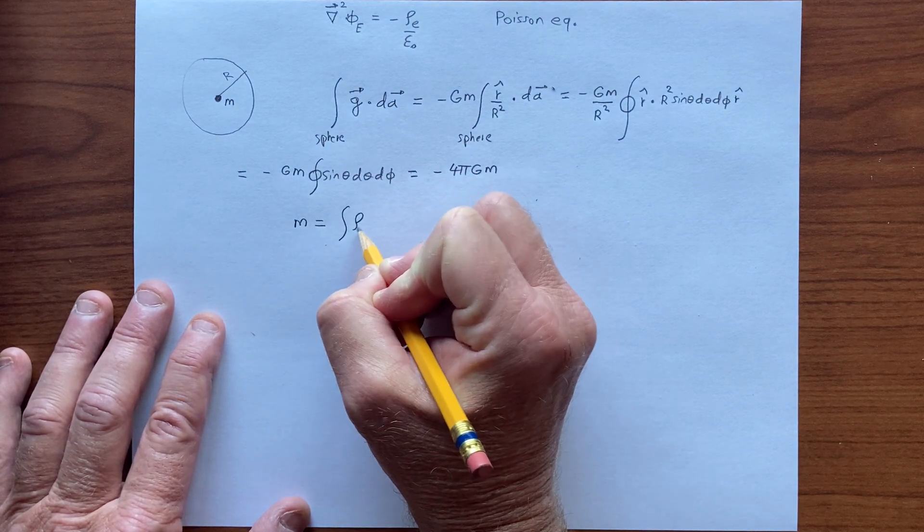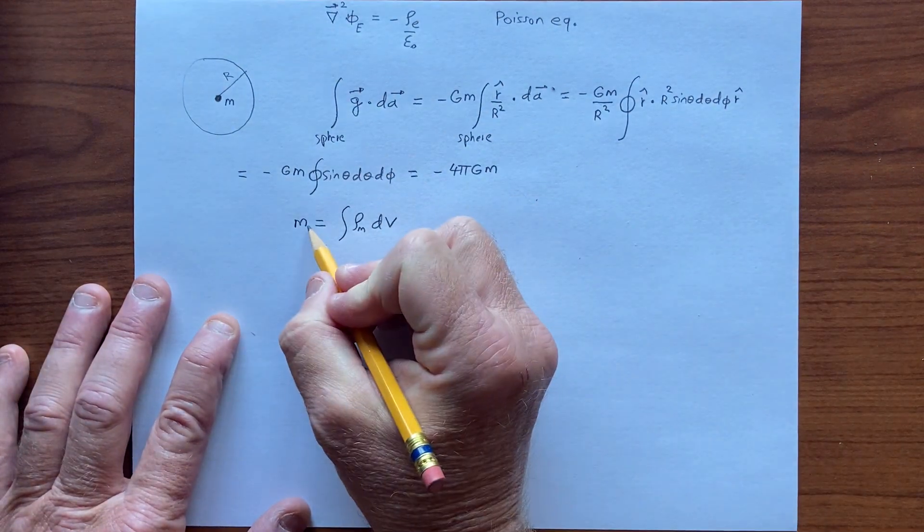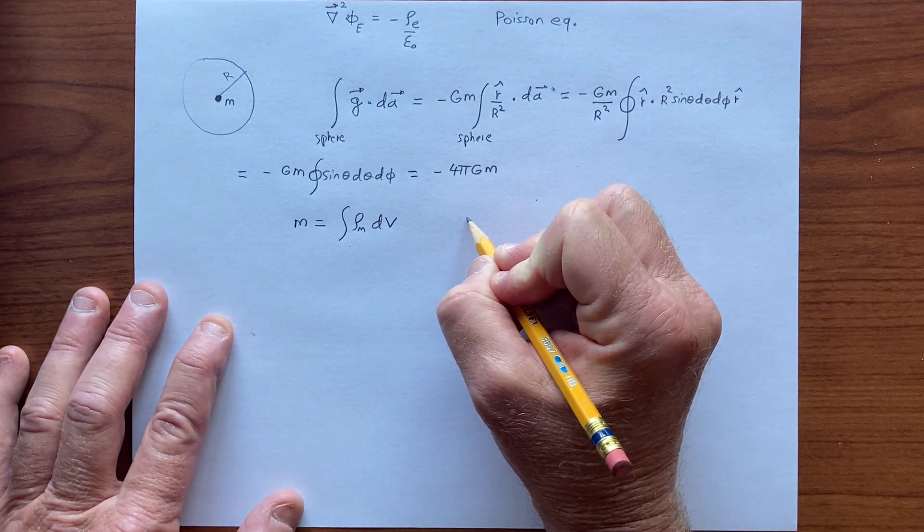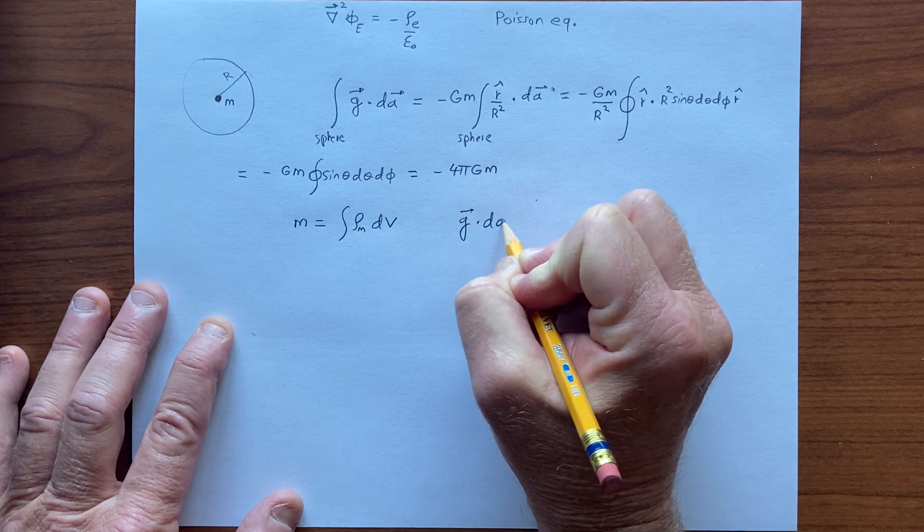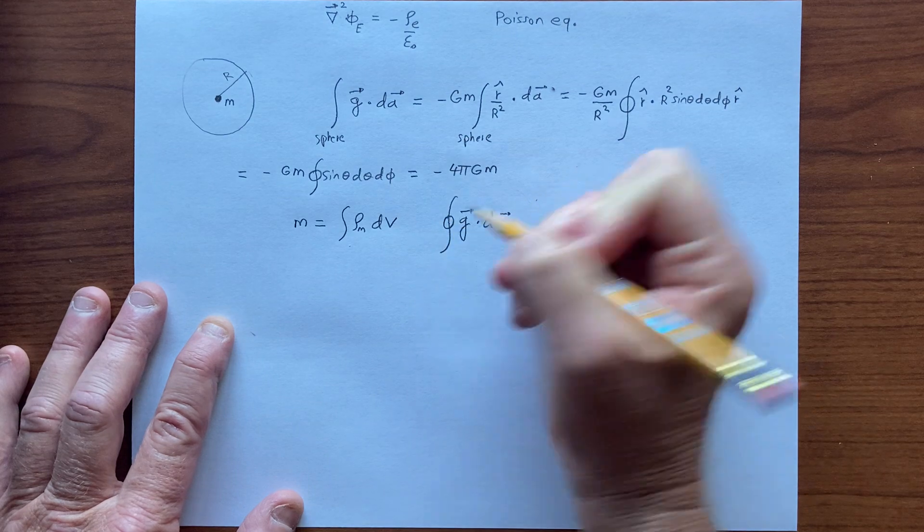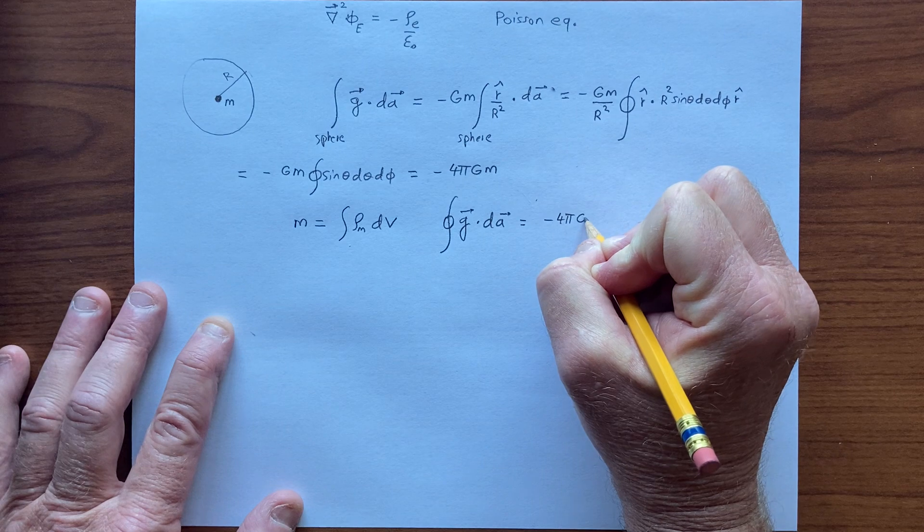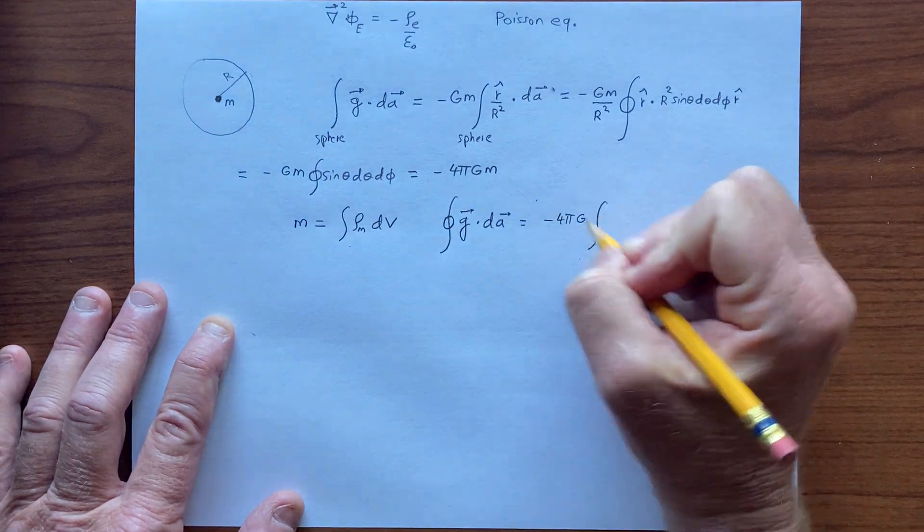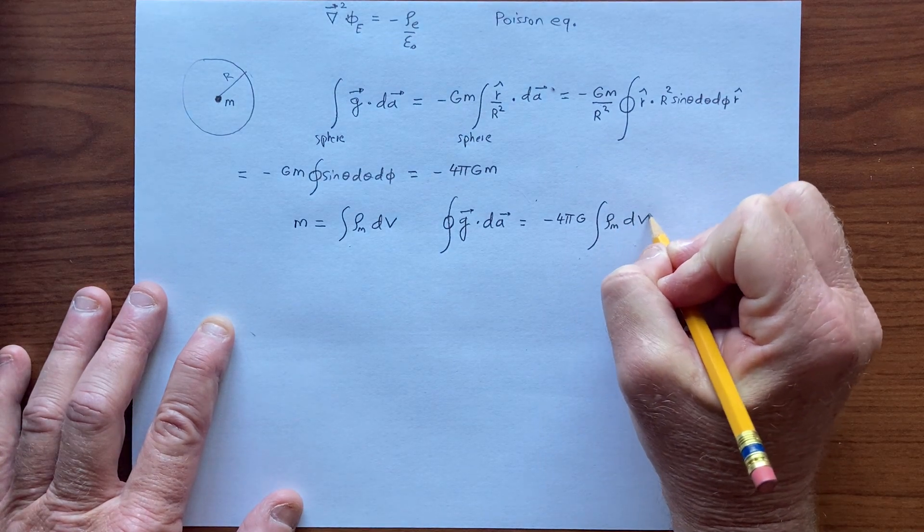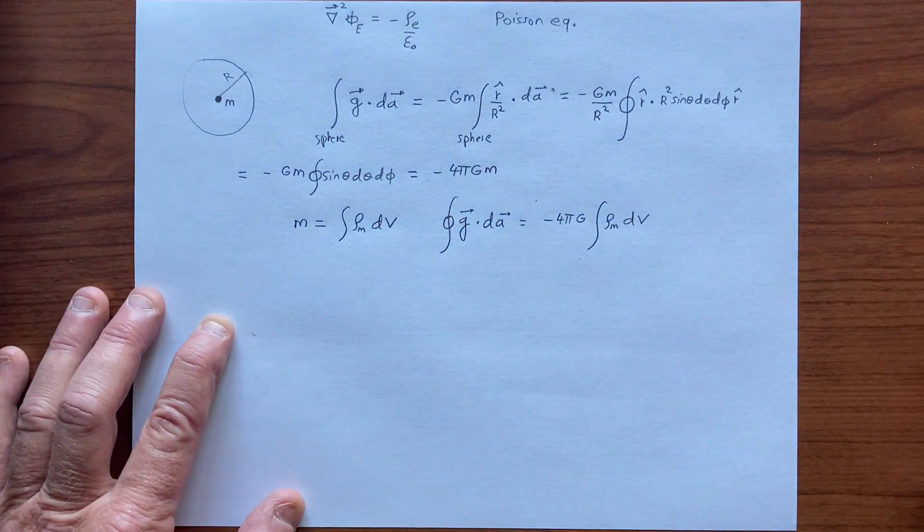Here, if we integrate the mass density over the volume, then we get the mass. If we integrate all over in here, and so we can say that the integral of the acceleration field over, in this case it's a closed surface, is equal to minus 4 pi g, and write the mass like this, mass density in volume, over the volume that has the surface as a boundary.